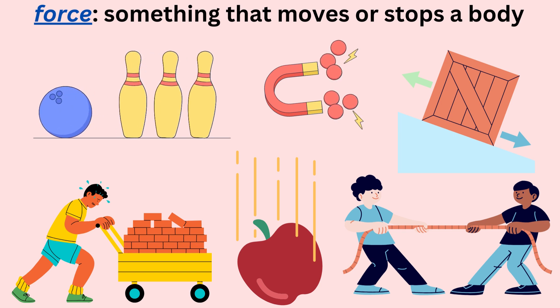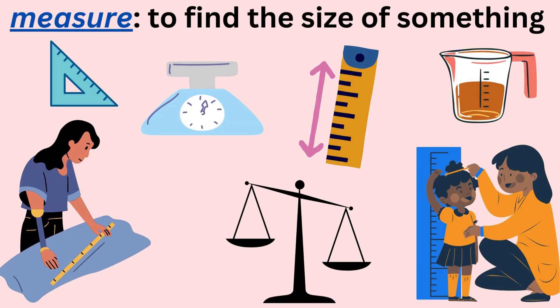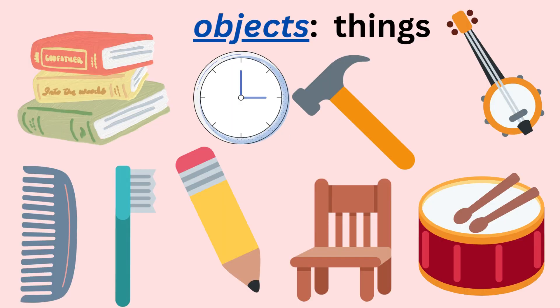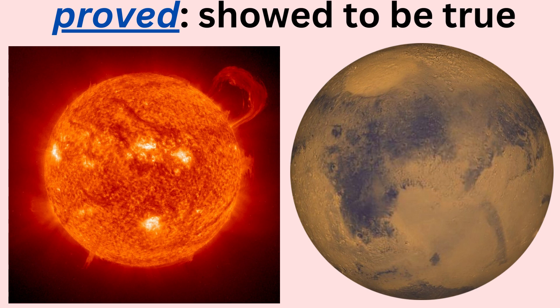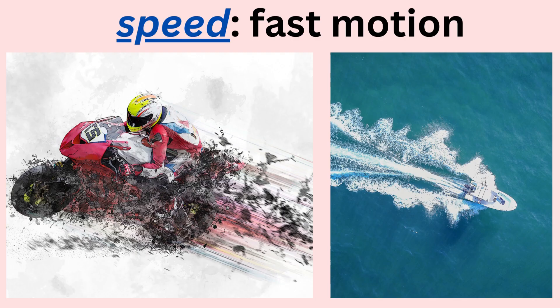Force: to make something move or open. Name something you have to force to make move or open. Measure: to find the size of something. What is something you can measure? Objects: things. Name the objects in the picture. Proved: showed to be true. Scientists have proved many things about the sun and the planets. Speed: fast motion. A motorcycle and a speedboat can both travel at high speeds.